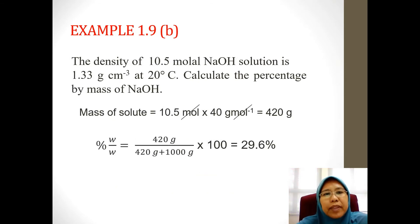For B, the density of 10.5 molar sodium hydroxide solution is given. The percentage by mass is the one that we need to calculate. So we need to find the mass of solute. 10.5 mole multiplied by the molar mass of sodium hydroxide, we get 420 grams. So 420 grams divided by the total mass for the solution, which is solute plus solvent, 420 plus 1,000, multiply by 100, we get 29.6%.